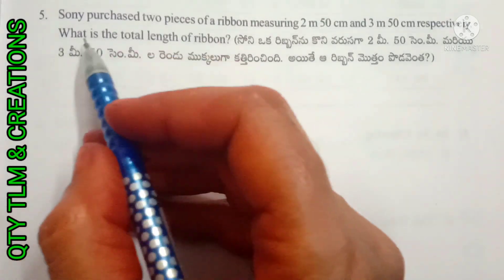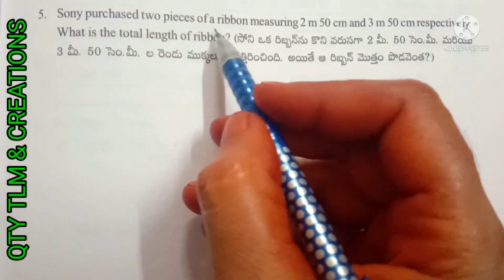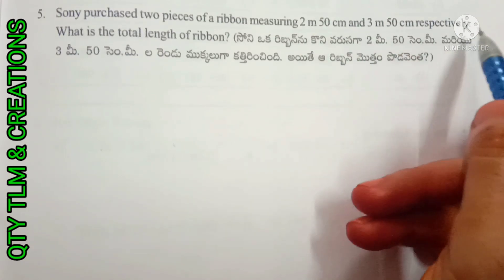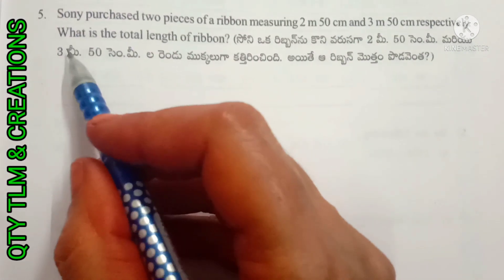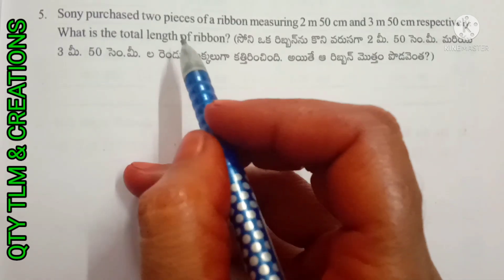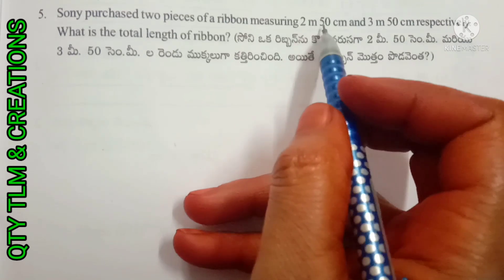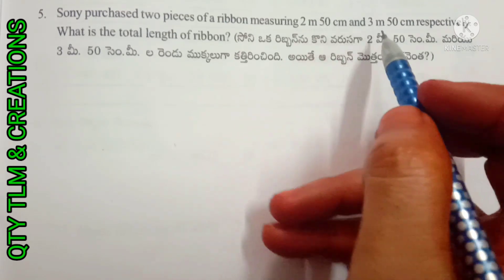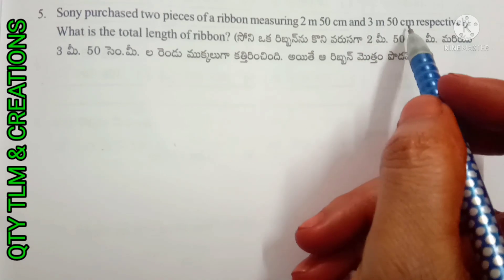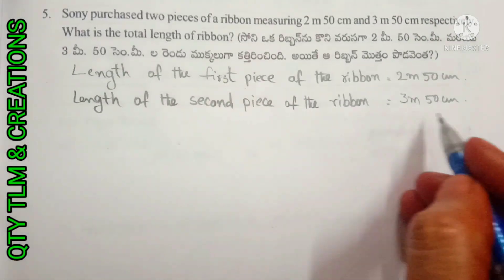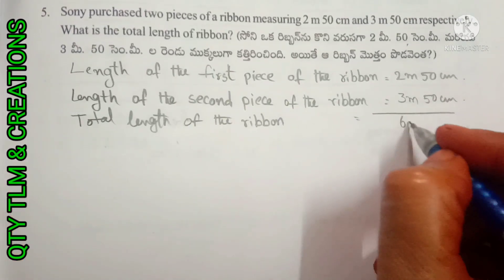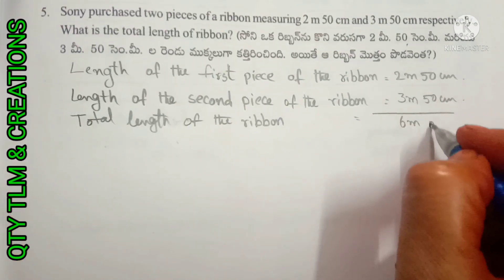Next question: Sony purchased two pieces of ribbon measuring 2 meter 50 centimeter and 3 meter 50 centimeter respectively. What is the total length of ribbon? Length of the first piece equals 2m 50cm. Length of the second piece equals 3m 50cm. Total length of the ribbon equals 6 meters 0 centimeters.